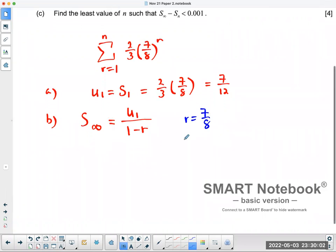Okay, so now that we have the r value, we have u₁, we can find the sum. So u₁ is 7 over 12. This is 1 minus 7 over 8. So this is 1 over 8.